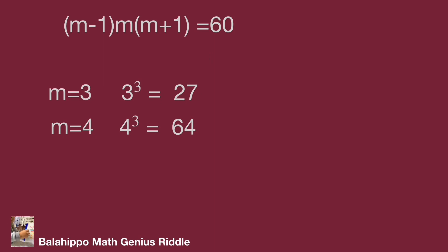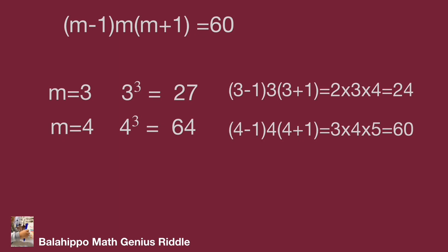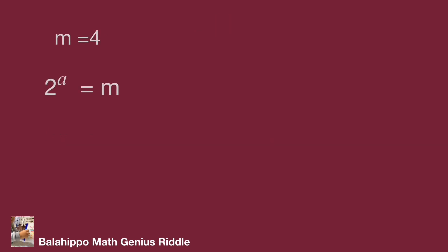With m equal to 4, substitute m by 4 into the equation. We get 3 times 4 times 5 equal to 60. Bingo! The answer is m equals 4. Then since 2 power of a equals m equals 4, and 4 equals 2 squared, so a equals 2.